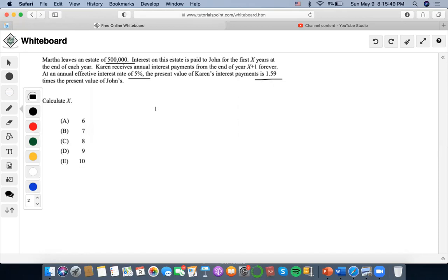So his payments would just be denoted as P because we don't really know what they are yet, at the present value of 5% for the first X years. And for Karen, she received annual interest payments from the end of year X plus one forever.